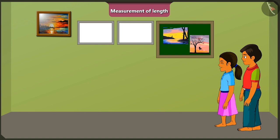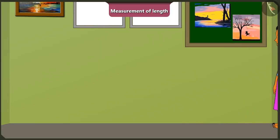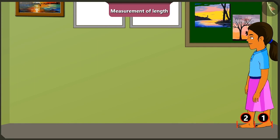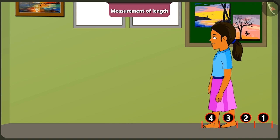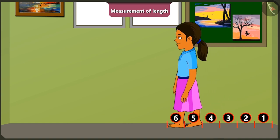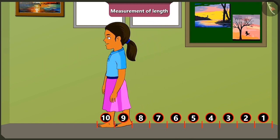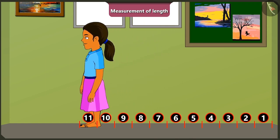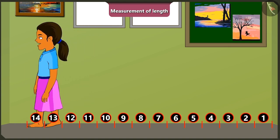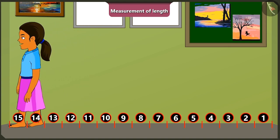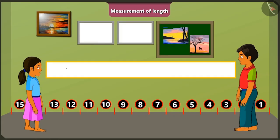With my foot length. See, if I measure the length of the room with my feet then the length of the room is 1, 2, 3, 4, 5, 6, 7, 8, 9, 10, 11, 12, 13, 14 and 15. So the length of this room is equal to 15 foot spans.